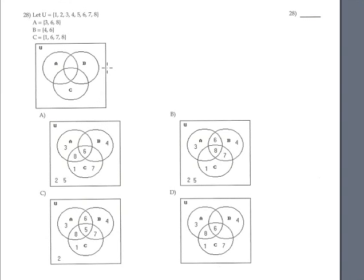Problem 28 is similar. Let's analyze what is the common element between sets A, B and C — it's 6. So 6 is located in the center region. What is the common between A and B? Only 6, so that region has nothing else. What is the common between A and C? Also 6, so that region is also empty.